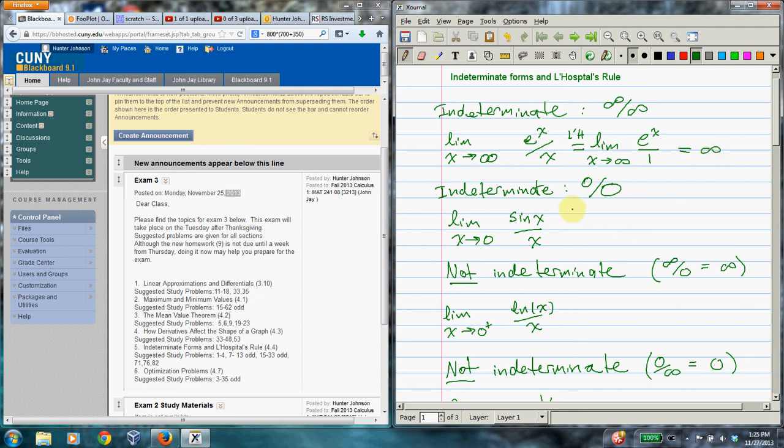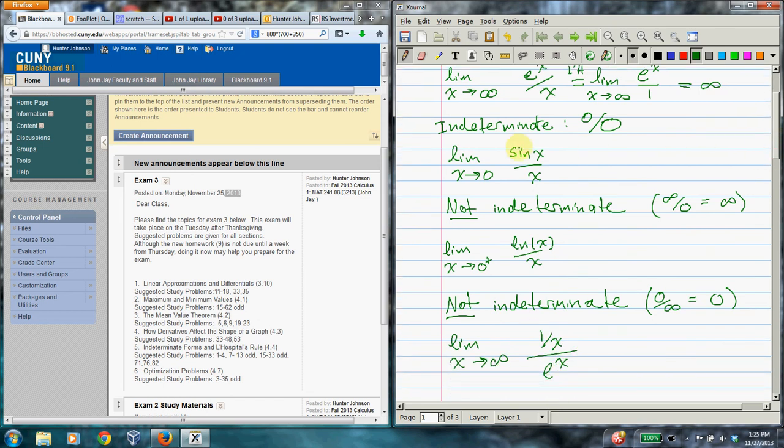Now we have an indeterminate form, an indeterminate limit of the form 0 over 0. So what happens as x goes to 0 of sine, it goes to 0, and obviously x goes to 0 as x goes to 0. So this is another situation where you can apply L'Hopital's Rule. And this becomes the limit as x goes to 0 of cosine x over 1. And now you can just plug in cosine 0 as 1. So 1 over 1 is 1.